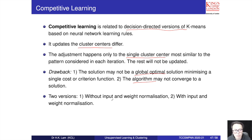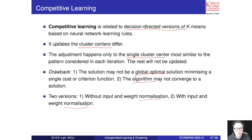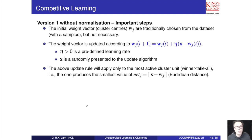The first version is without normalization. The second version is with normalization. When we do normalization, we also need augmentation to generate an augmented dataset before performing normalization. We will now see the details of Version 1 without normalization.